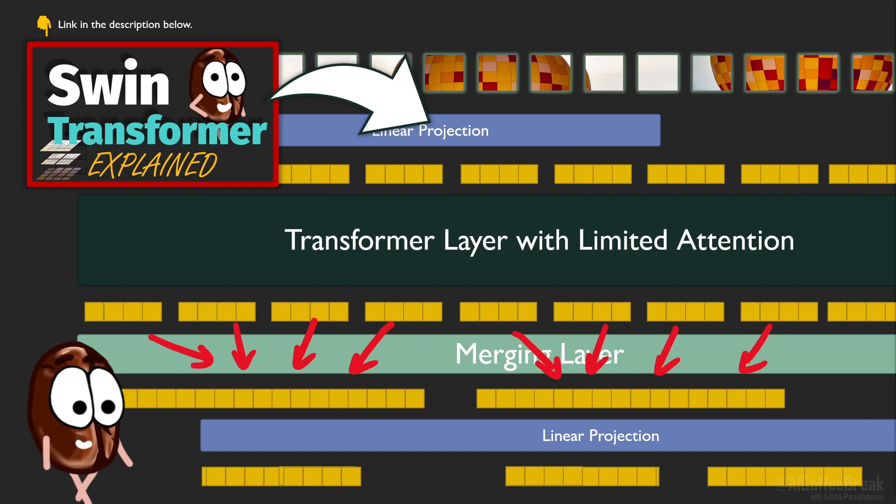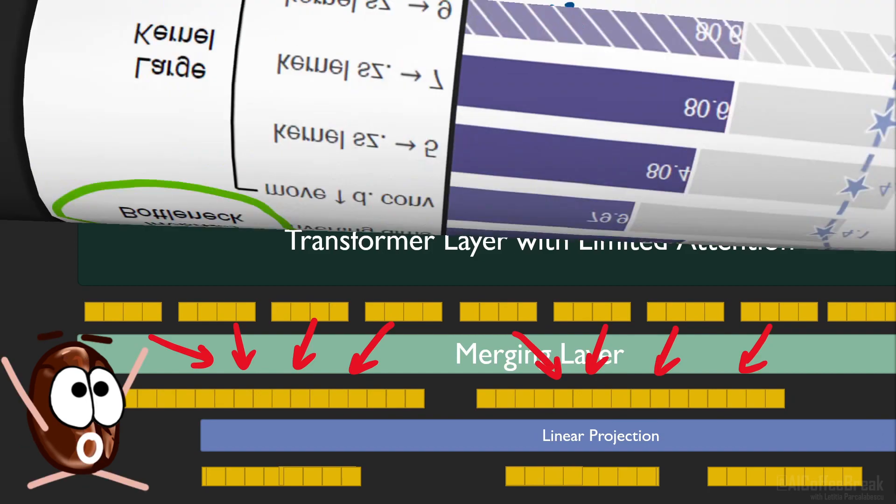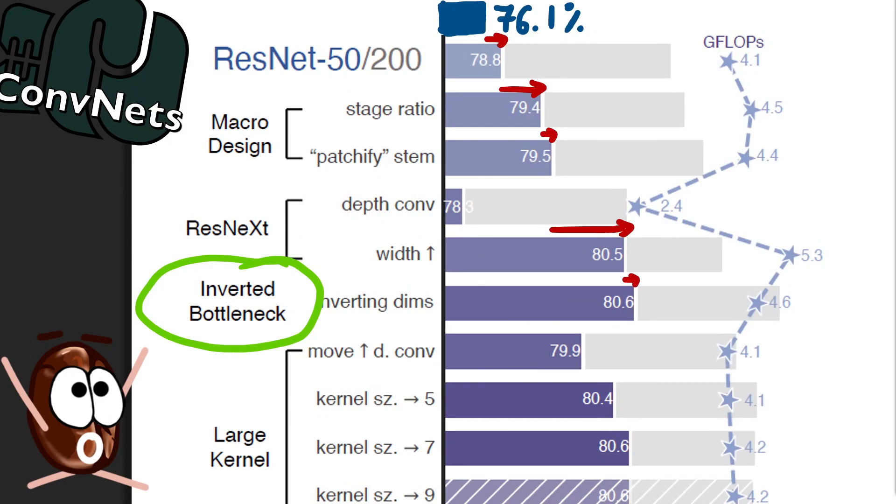they want to copy this idea by using a, we quote, inverted bottleneck design with an expansion ratio of four used in convnets. And hooray, this increases performance too, if only by a little.